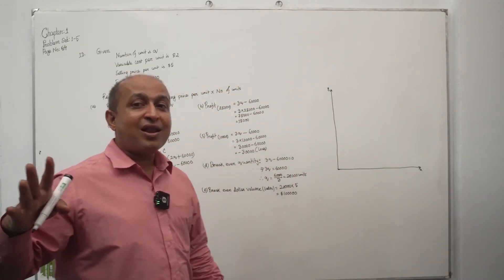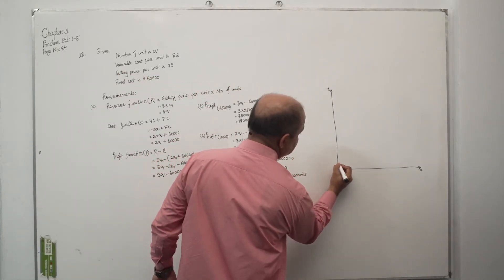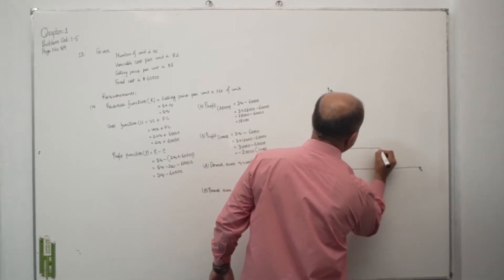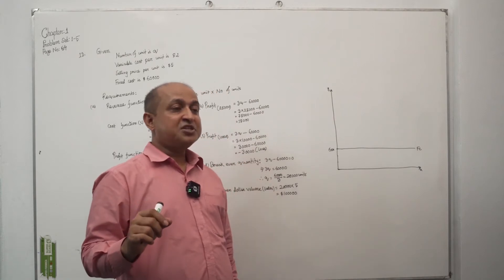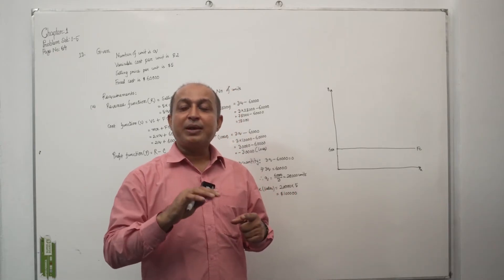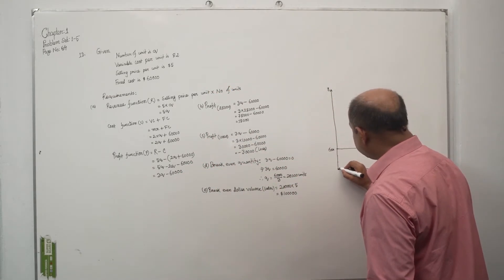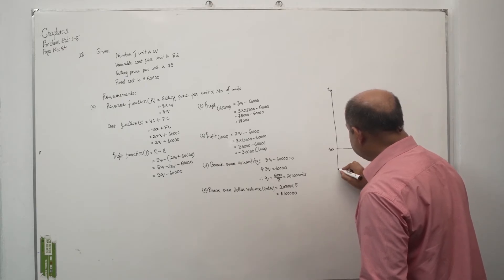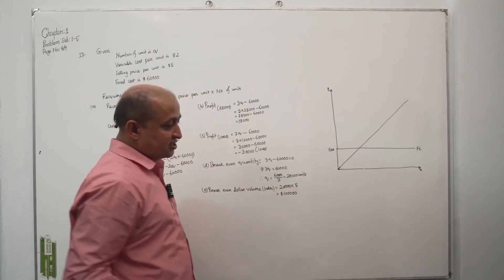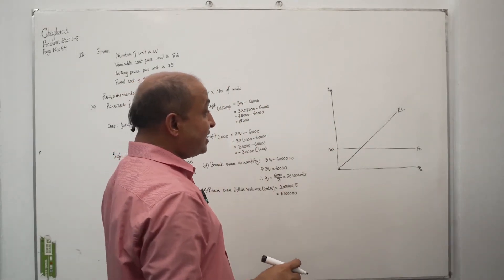On the chart, the fixed cost line is at $60,000. The x-axis represents units: 20,000, 40,000, 60,000. The fixed cost is a horizontal line. For the breakeven chart we have a revenue curve, cost curve, and fixed cost line. The breakeven point is where revenue equals cost.